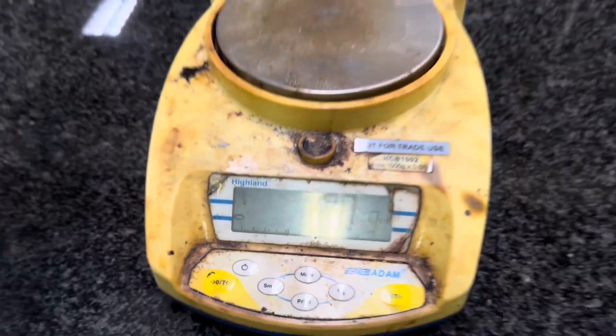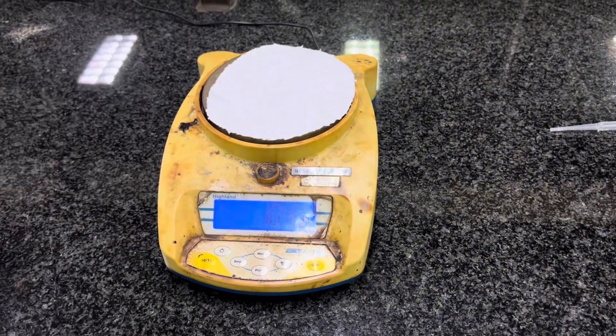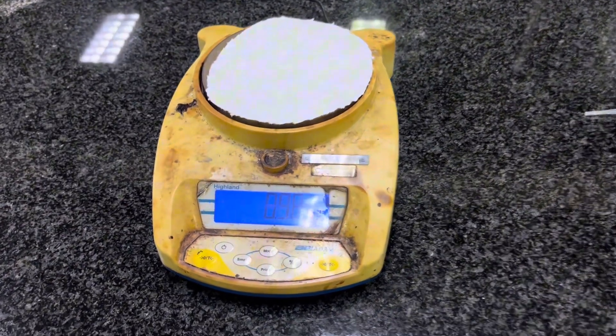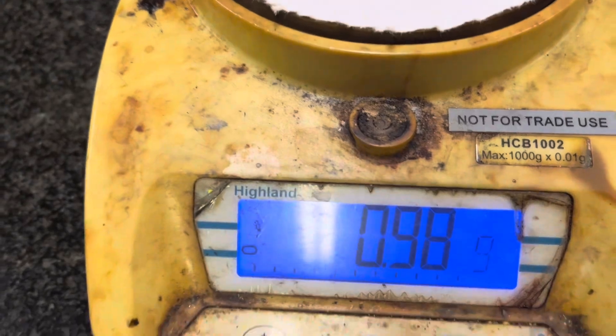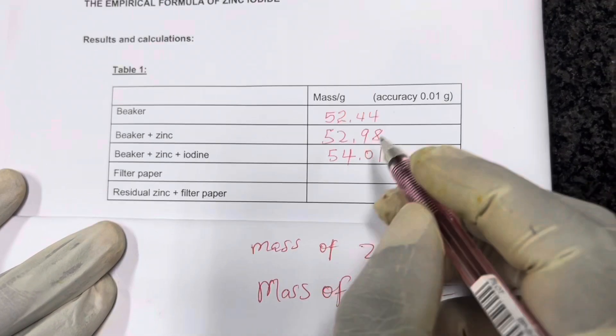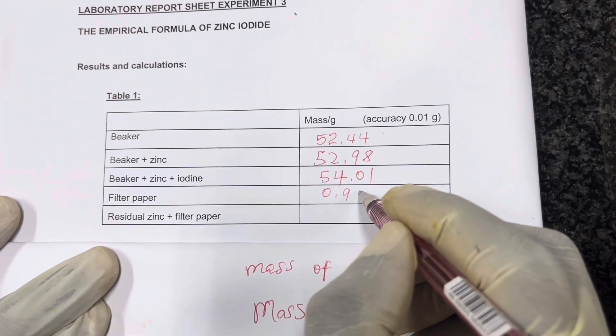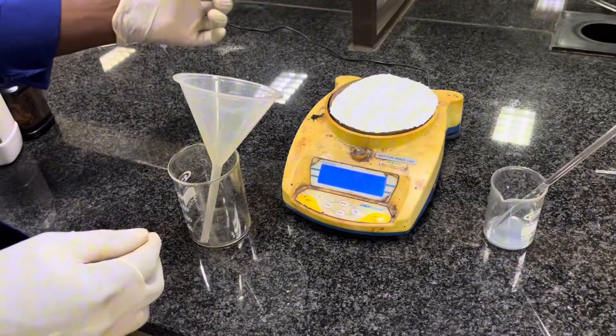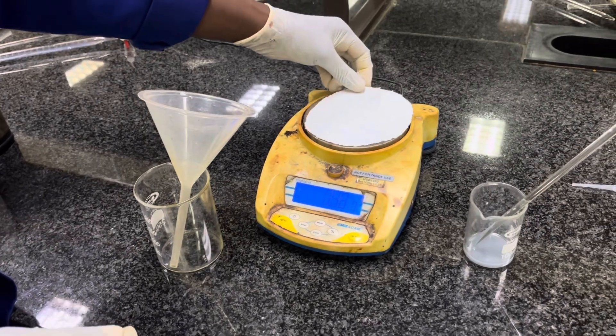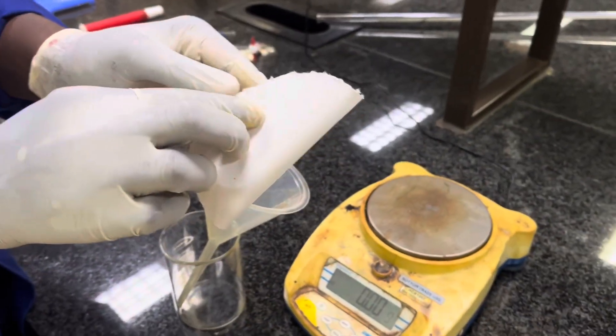Now let's weigh a filter paper. We have the weighing balance is at zero. So we'll put the filter paper on top so that we can get the mass of the filter paper alone. So once we are done with that, we'll record the mass on our table. The mass of the filter paper, here it is. We'll record it on the table. So that we can use it while knowing its actual mass.